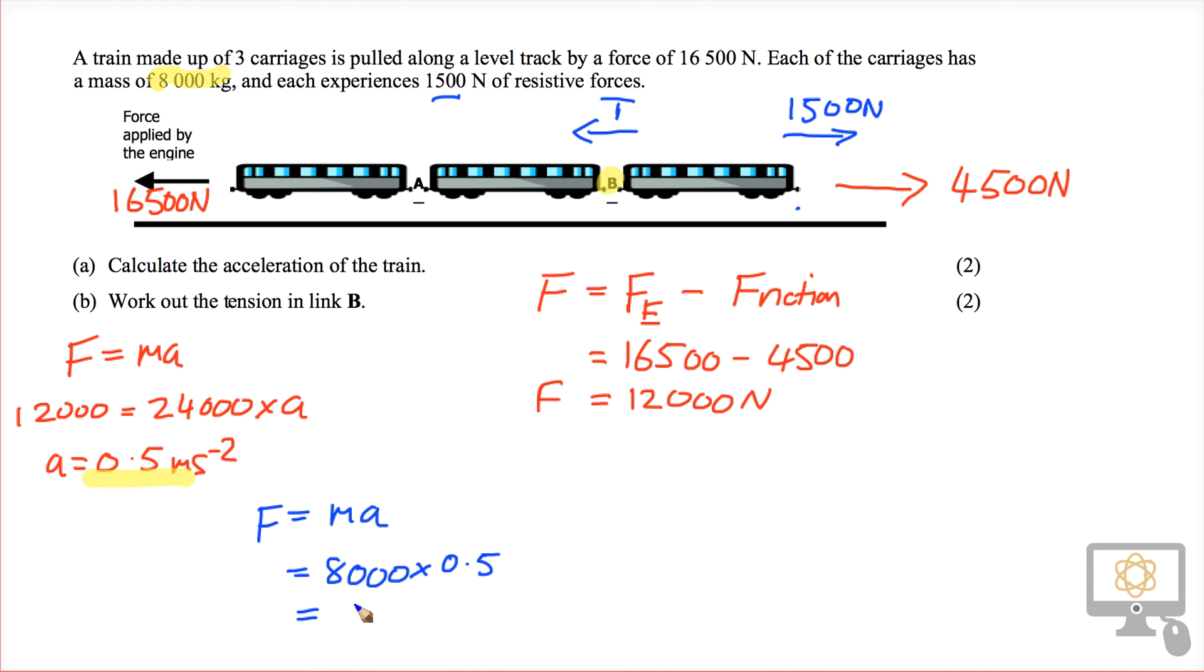That gives us an unbalanced force of 4,000 newtons. That's the unbalanced force acting on this carriage alone, which is the combination of the tension acting forward and the frictional forces acting in reverse. The unbalanced force is the tension minus frictional forces.